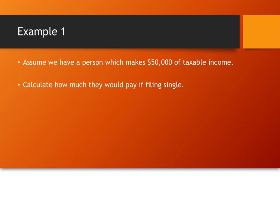Alright, so let's start out. Say we have a person who makes $50,000, and we're going to say that person is going to file single. Alright, so we've seen how to do this before. What we're going to do is single taxes, $50,000.